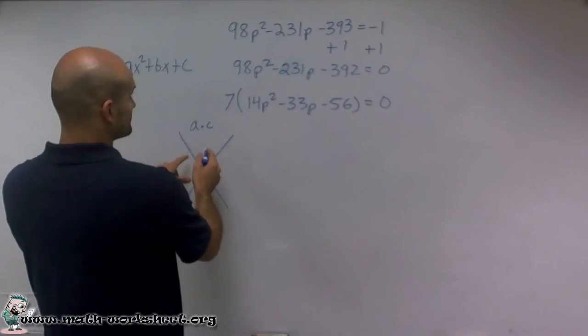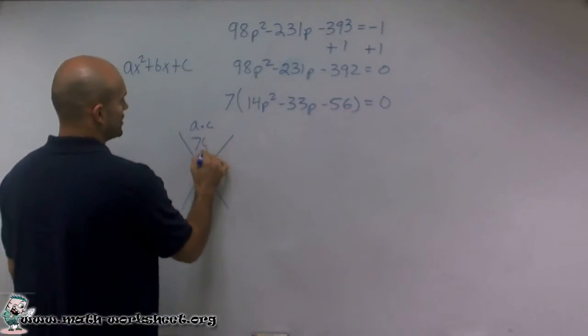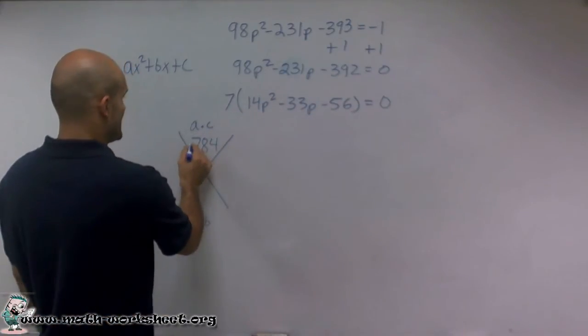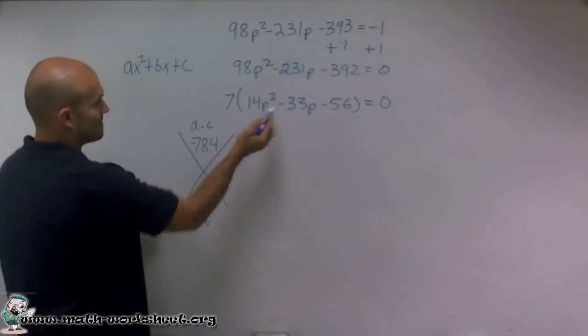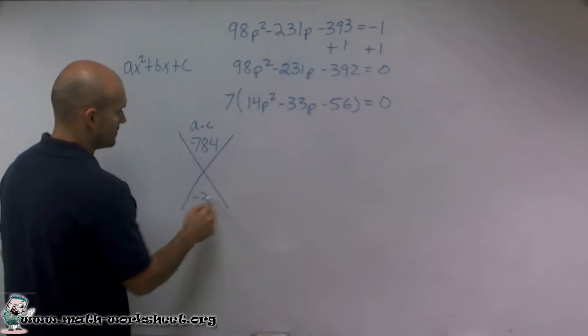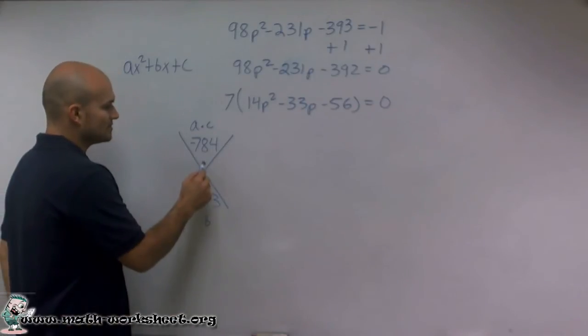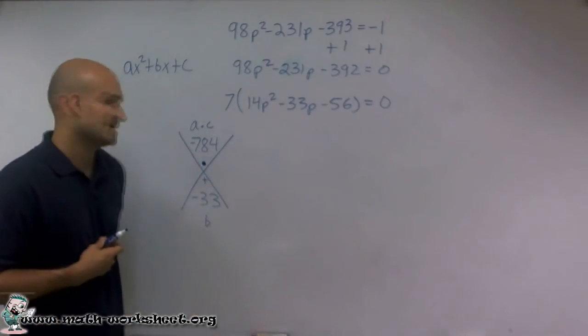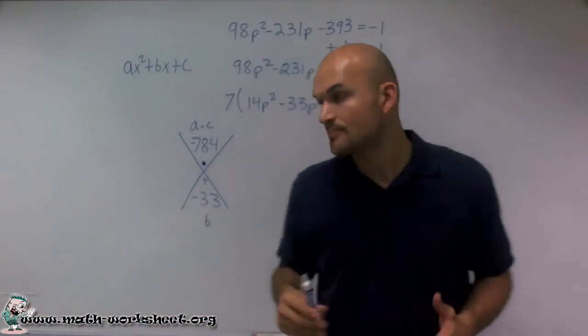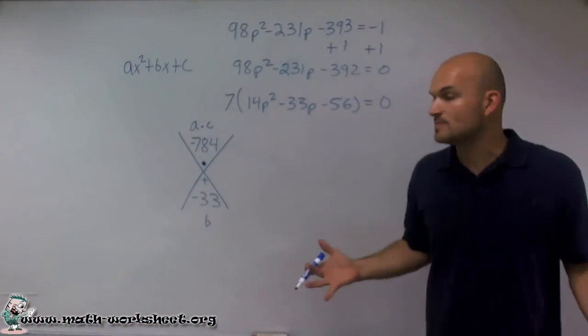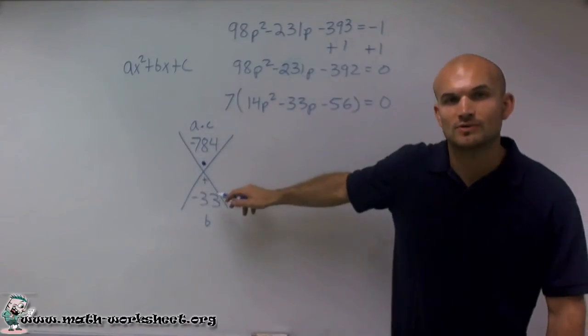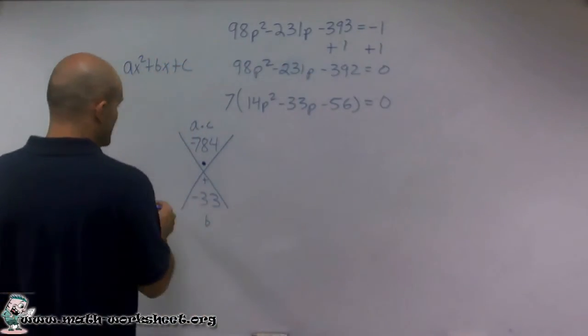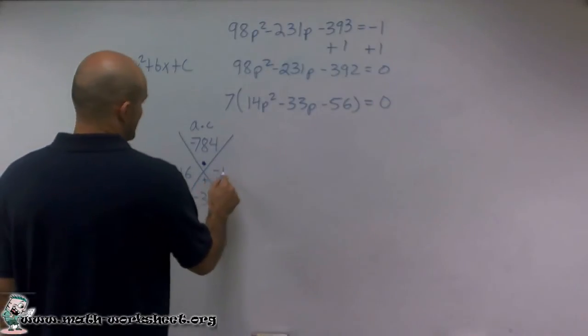So A times C, when I multiply them, is going to give me negative 784. That's 14 times negative 56. Then I take my B, which is going to be a negative 33. Now, what I want to do with these two numbers is I want to determine what two numbers are going to multiply to give me negative 784, but add up to give me a negative 33. So you need to look at the multiples of negative 784 and say what two numbers multiply to give you there, but more especially, which ones are going to add up to give you negative 33? Well, when you start to go through the multiples, what you end up with is a positive 16 and a negative 49.